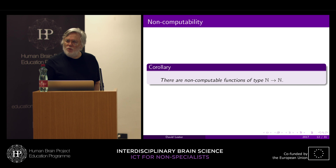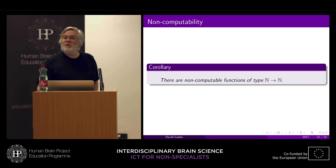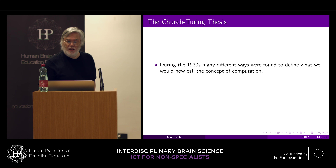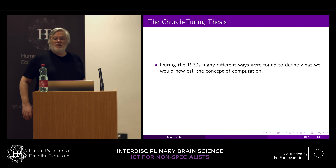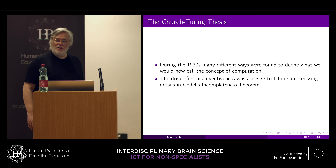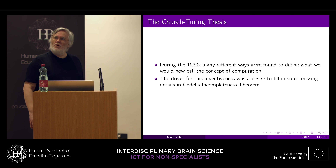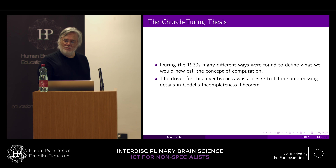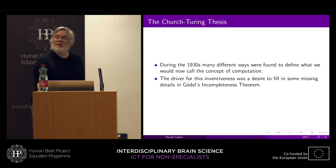Another way of looking at this is to find a particular problem which it's not possible to solve using a computer. During the 1930s, there were many different ways found to define what we would now call the concept of computation. The driver for this inventiveness was a desire to fill in some missing detail of Gödel's incompleteness theorem — basically, he'd said the theorem required you to algorithmically generate solutions, and the question arose: what do we mean by 'algorithmically generate'? These concepts were coming in in the late 1930s.